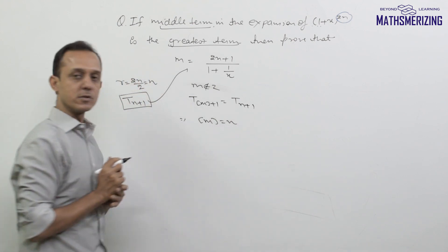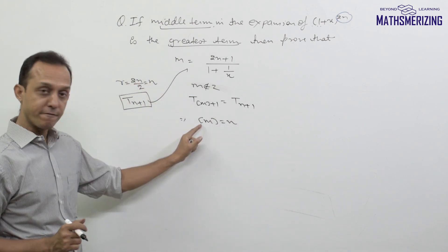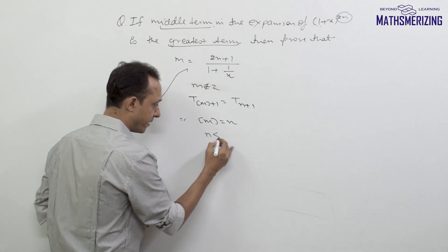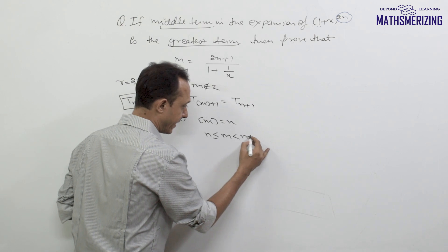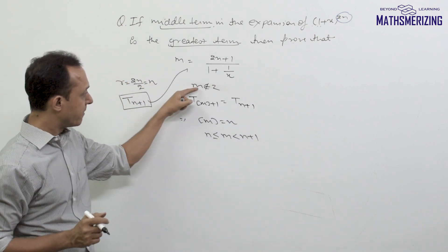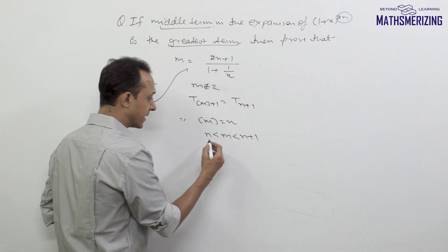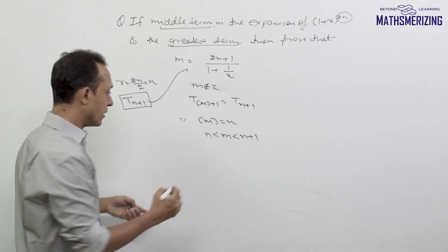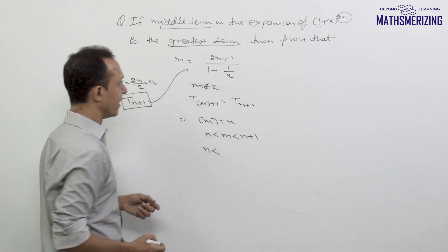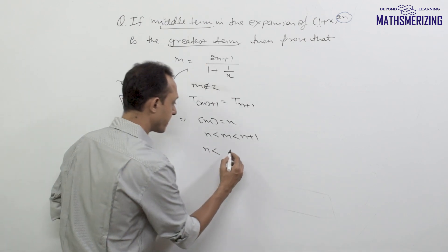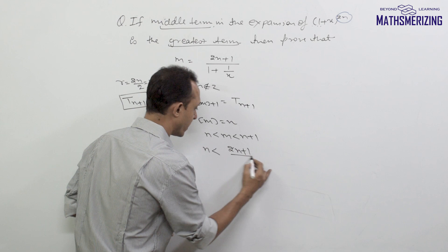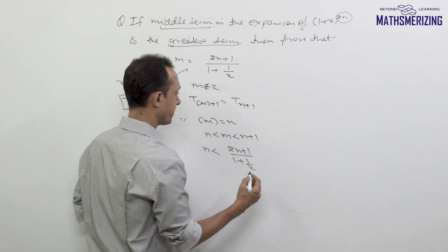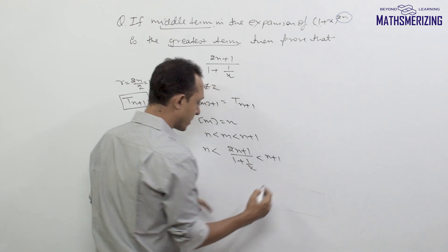From here, we can say floor(m) equals n. Now, since floor(m) = n, the value of m must lie between n and n+1. Because m is not an integer, we won't have the equality sign, so the condition is n < m < n+1. The value of m is (2n+1)/(1 + x), and it should be less than n+1.